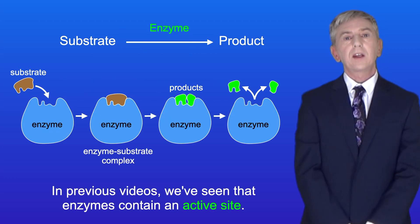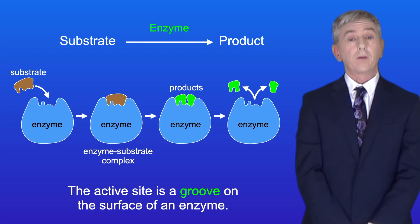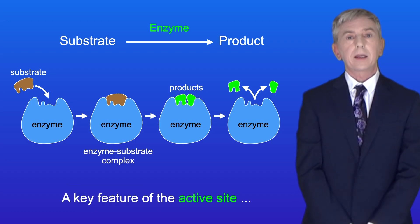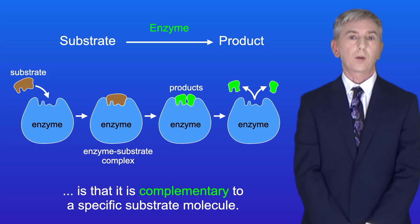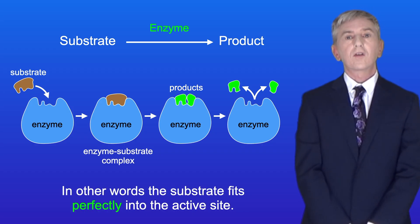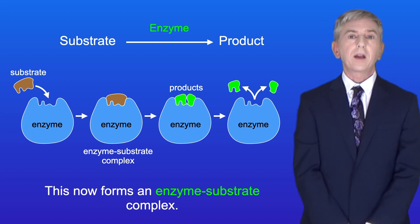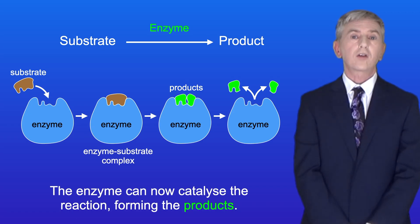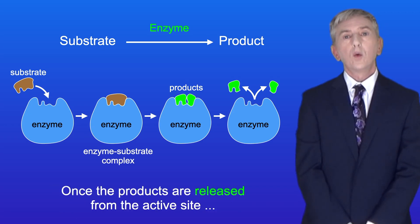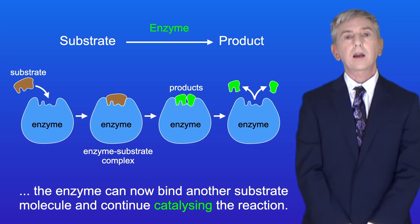In previous videos, we've seen that enzymes contain an active site. The active site is a groove on the surface of an enzyme, and a key feature of the active site is that it's complementary to a specific substrate molecule. In other words, the substrate fits perfectly into the active site. This forms an enzyme-substrate complex, and the enzyme can now catalyze the reaction forming the products. Once the products are released from the active site, the enzyme can bind another substrate molecule and continue catalyzing the reaction.